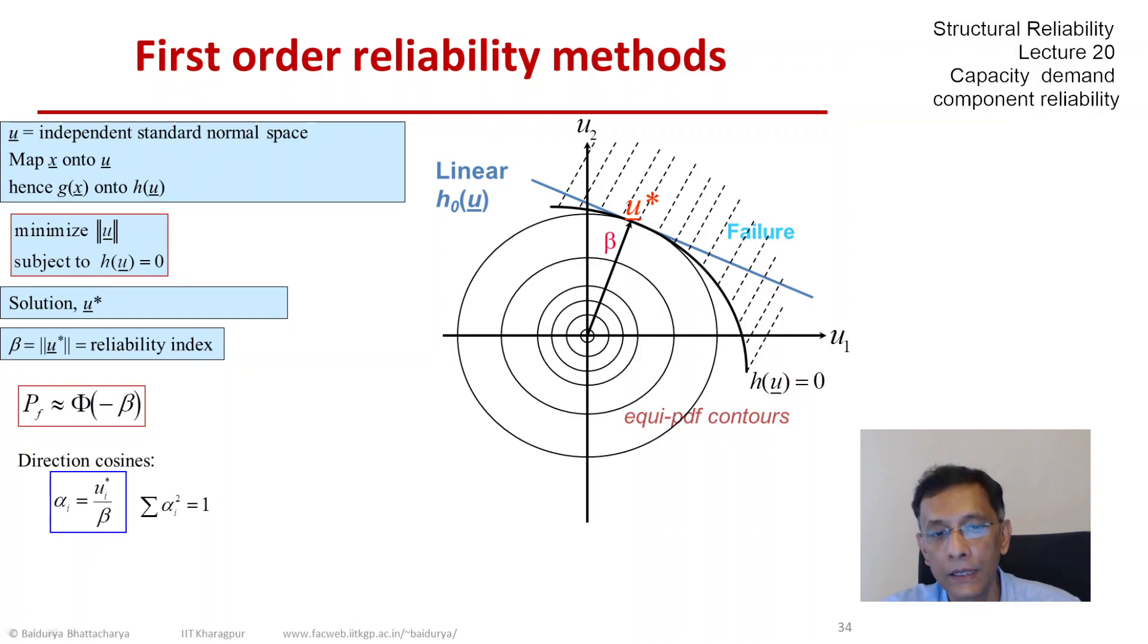Alpha_i measures that. Larger is alpha, the greater is the contribution of that random variable to the reliability. You can map it back to x and find out which are the most important random variables in the physical space of basic variables contributing to failure.